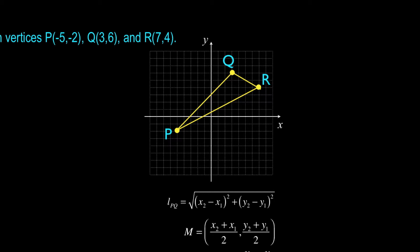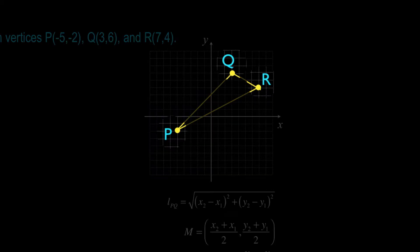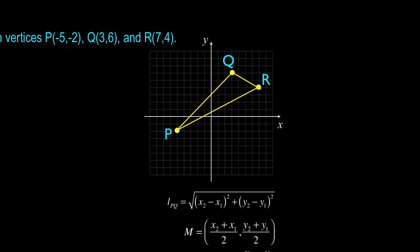Now a circle that circumscribes a triangle is a circle that passes through all three vertices of the triangle. So your circle is going to look something like this. What's interesting is that any triangle can be circumscribed by a circle. If we're trying to find the area of that circle, we need the radius of the circle, we get the radius from the center.